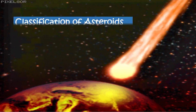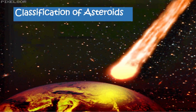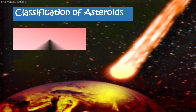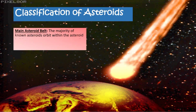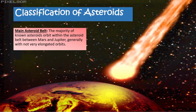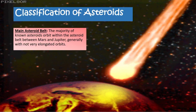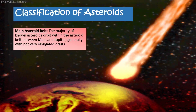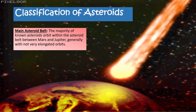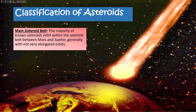We can also classify asteroids as to their location. The first one is the main asteroid belt, where we can find the majority of the known asteroids. This main asteroid belt is actually found between Mars and Jupiter.